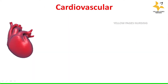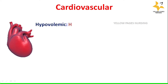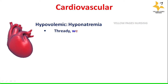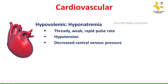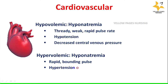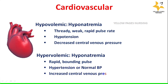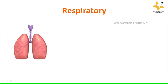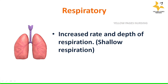Looking at system-wise manifestations: in the cardiovascular system, when hyponatremia is caused by hypovolemia, it is characterized by weak, rapid pulse rate, hypotension, and decreased central venous pressure. When caused by hypervolemia, it shows rapid bounding pulse, hypertension or normal blood pressure, and increased central venous pressure. Respiratory signs and symptoms may include increased rate and depth of respiration, or shallow respiration.